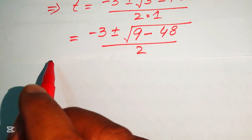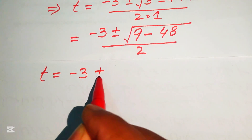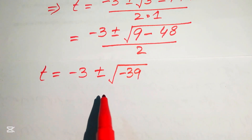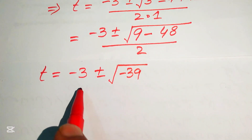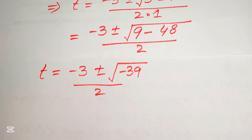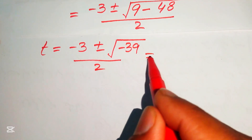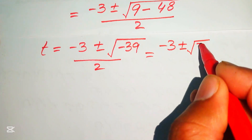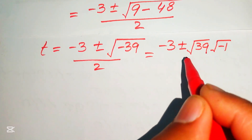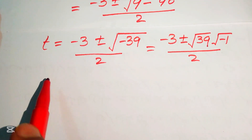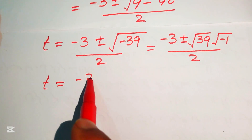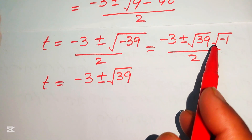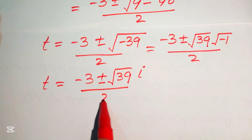Further simplification gives t equals minus 3 plus or minus square root of minus 39, divided by 2. We separate the square root: square root of minus 39 equals square root of 39 times square root of minus 1. Since square root of minus 1 equals iota (i), we get t equals (minus 3 plus or minus i times square root of 39) divided by 2.